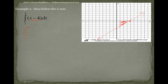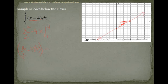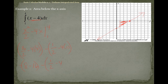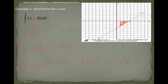Taking the integral of this function gives us x squared over 2 minus 4x, evaluated from 1 to 4. Plugging in 4: 16 over 2 minus 16. Plugging in 1: 1 over 2 minus 4, giving us negative 3 and a half. That's negative 8 plus 3 and a half, which equals negative 4 and a half. Since this area is underneath the line, we get a negative value, so we take the absolute value to get 4 and a half as the area.